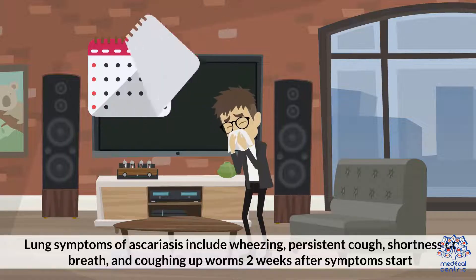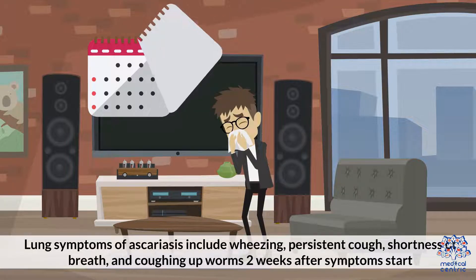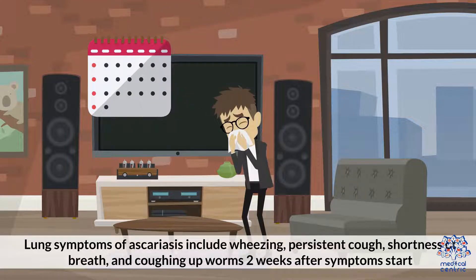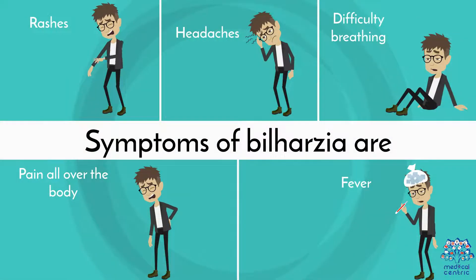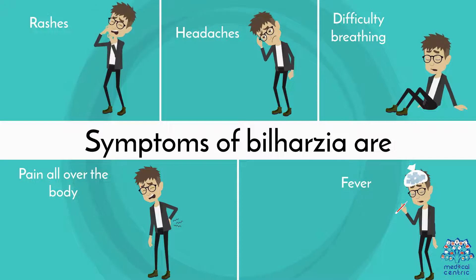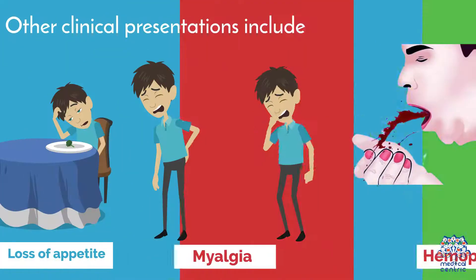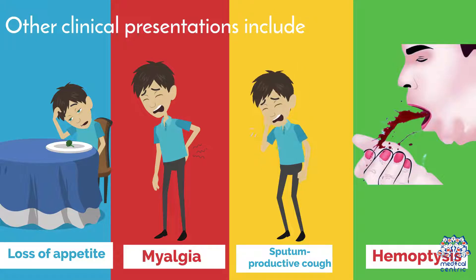Lung symptoms of Ascariasis include wheezing, persistent cough, shortness of breath, and coughing up worms two weeks after symptoms start. Symptoms of Bilharzia are rashes, headaches, difficulty breathing, pain all over the body, and fever. Other clinical presentations include loss of appetite, myalgia, sputum productive cough, and hemoptysis, among others.